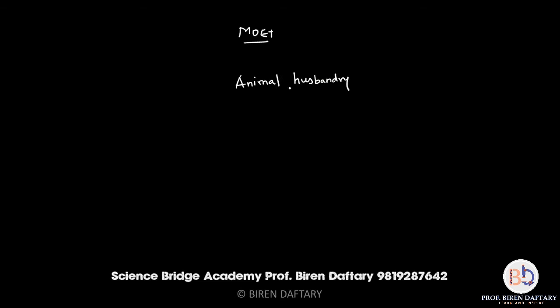Animal husbandry is the rearing of domesticated animals so that you get products and byproducts which are economically very viable. In animal breeding, this technology is used to produce good quality hybrid animals. Hybrids are much stronger animals compared to their parents — that is called hybrid vigour. Hybrid animals give a better yield, their lifespan also increases, and MOET is used in their production.